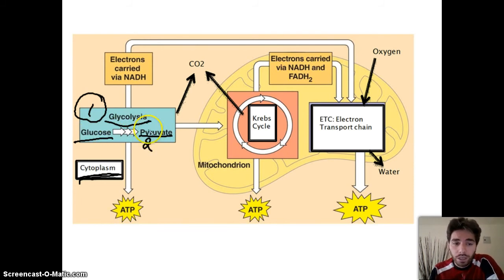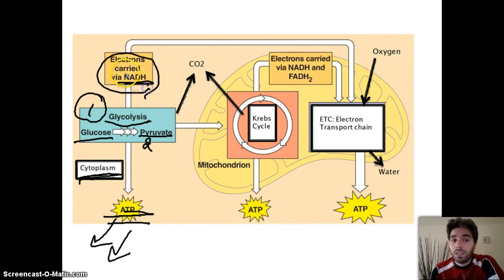This breaking down or glycolysis will give us electrons in the electron carrier NADH and will give us a bit of ATP. ATP is the reason we're making the whole process - to get energy. The ATP will be used wherever it's needed, and NADH, we will see later what will happen with it.